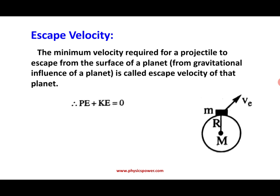That means the total potential energy plus kinetic energy should be equal to zero. The potential energy has a negative value because it is an attractive field, and kinetic energy is positive, so the net is zero. This means the body is free from the gravitational field. So we can write: kinetic energy equals minus potential energy.